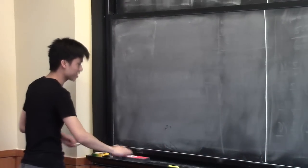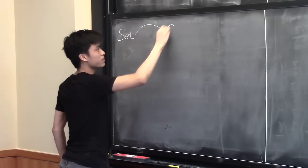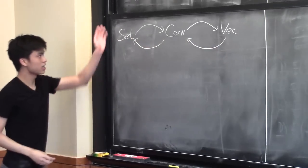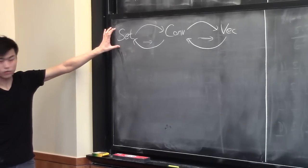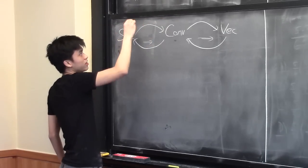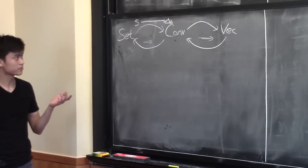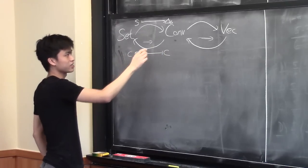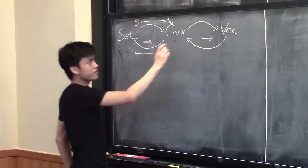One thing I should do first is show you a useful adjunction. The simplices are free — and what I mean is there's an adjunction between Set and Conv. Given a set, you can form the simplex whose vertices are that set — the S-vertex simplex. And then given a convex set, you just forget it. So here's a forgetful functor and here's a free functor, and this is left adjoint to the right.